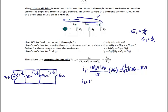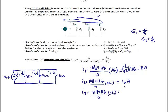I3 through the 6 ohm = (18||9||6) / 6 × 36 = 4/6 × 36 = 12 amps. To check using KCL: 8 + 16 + 12 = 36, which equals the source current, so it checks.